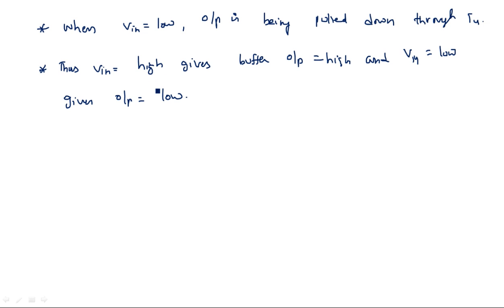So in this way we can use two different types of super buffers — inverting and non-inverting — to drive signals with large capacitive loads. This reduces delay, increases the speed of the signal, and improves the gain, thereby avoiding delay problems associated with driving large capacitive loads. In the next video I will explain the third type of high-capacitance driver, which is the BiCMOS driver. Thank you.